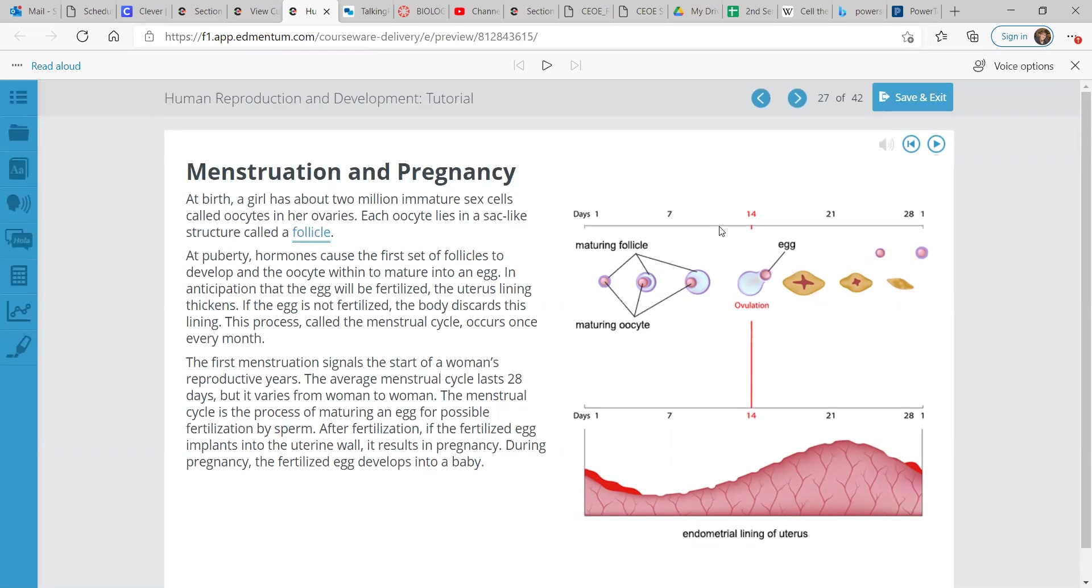So here we have days 1, 7, 14, 21, and 28, and it shows you the life cycle of that.